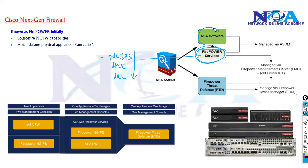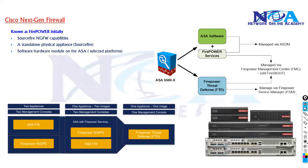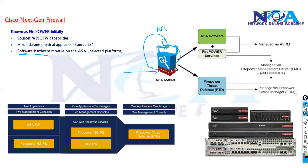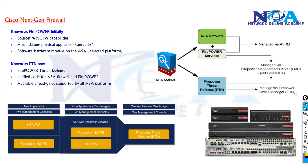Firepower can combine with the existing ASA. You can add a module inside the ASA — either in the form of hardware or software — making your ASA do both jobs. Traffic comes into the ASA, gets redirected for next-generation IPS or Firepower Services, and is then sent back. That's how it works.